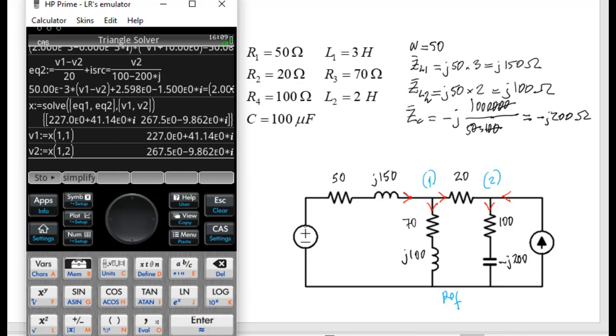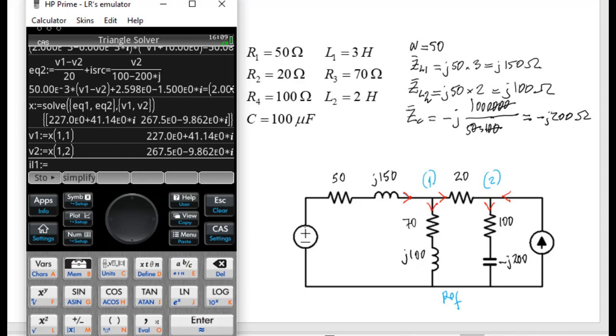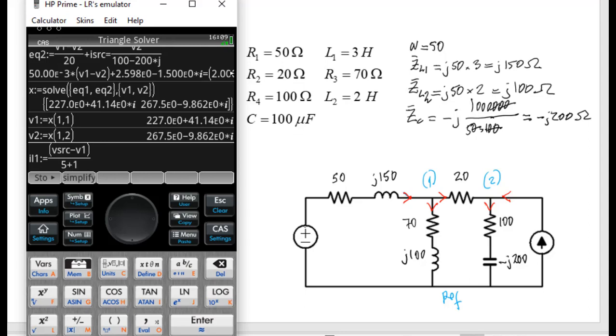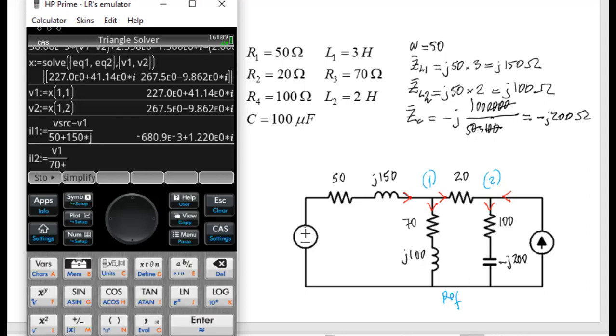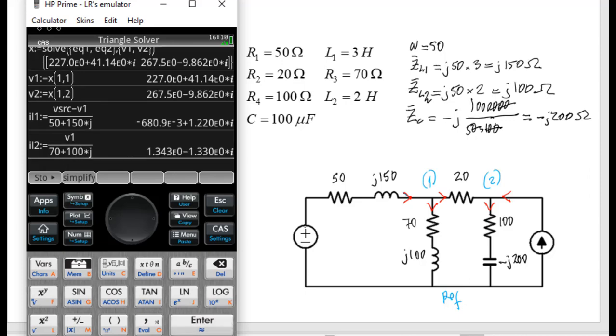We say the current in inductor 1 is (V source - V1) divided by 50 in series with j150. That is the current I want, IL1. And I can do the same. Let me do that for IL2. IL2 is V1 divided by 70 in series with j100. That is IL2.